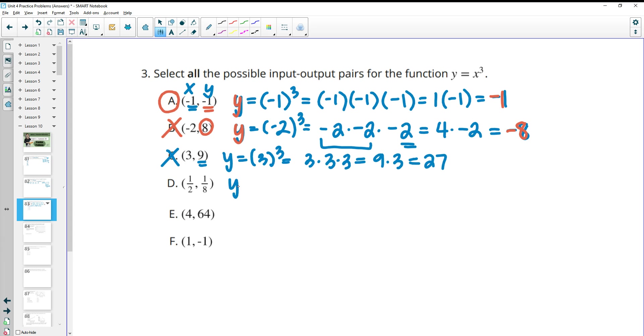Part D asks us to do (1/2)³. So when we do 1/2 times 1/2 times 1/2, when you multiply fractions, you multiply tops times tops and bottoms times bottoms. So we're going to get 1 times 1 times 1 is 1, and then 2 times 2 times 2 is 8. So we get 1/8, which is what they have here. So then part D is good.